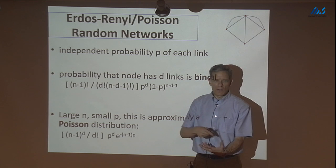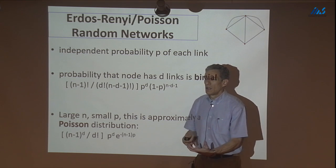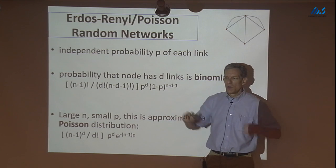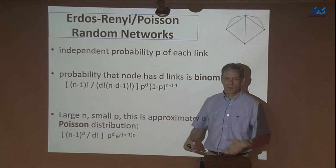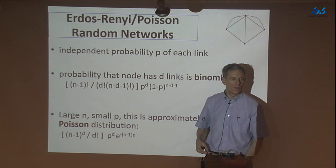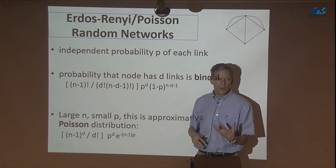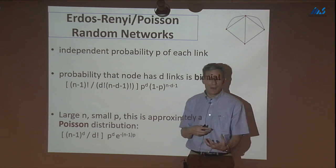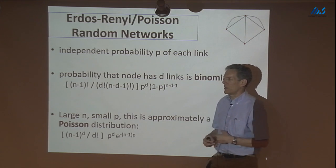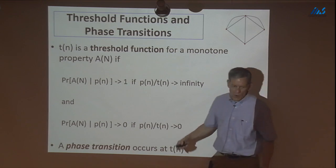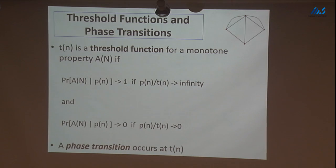The idea: fix n nodes and ask about the probability of seeing a particular graph. Every graph has a positive probability, so to say anything meaningful we have to look at limits — law of large numbers calculations — where as the number of nodes gets large, the chance a graph has a certain property goes to 1 or 0. We'll be able to say something about limiting probabilities. A threshold t(n) is defined such that a property goes to 1 when p(n) is large relative to t(n), and goes to 0 when p(n) is small.